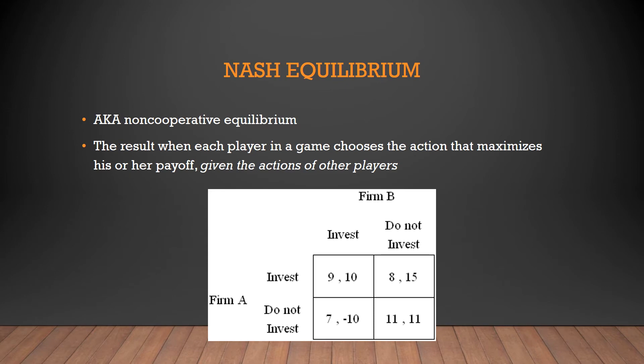We also have something known as a Nash Equilibrium, named after John Nash — the guy from A Beautiful Mind, mathematician, Nobel Prize winner. It's what he won his Nobel Prize for, in fact. This is also called a non-cooperative equilibrium. This is the result when each player in a game chooses the action that maximizes his or her payoff given the actions of the other players.